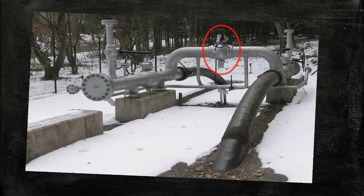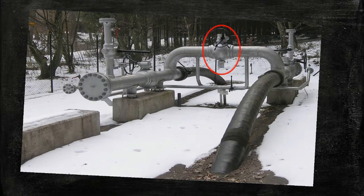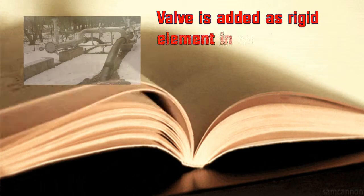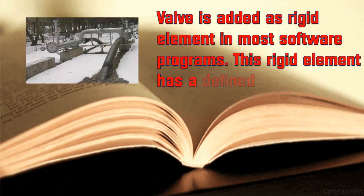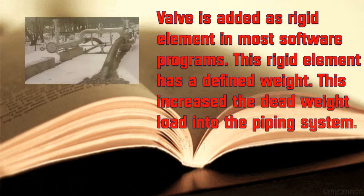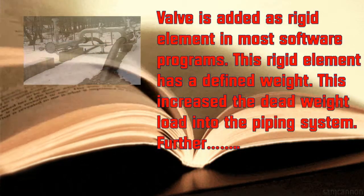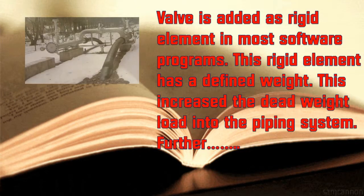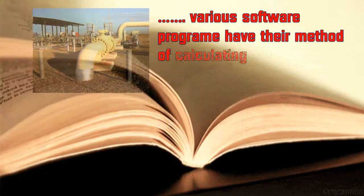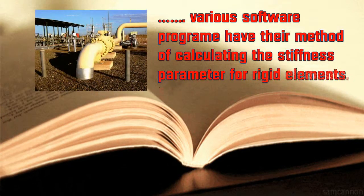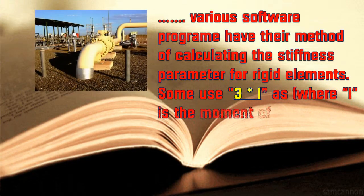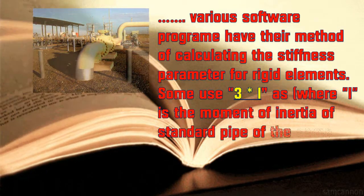The valve is added as a rigid element in most software programs. This rigid element has a defined weight, which increases the dead weight load in the piping system. Further, various software programs have their method of calculating the stiffness parameter for rigid elements — some use three times I, where I is the moment of inertia of a standard pipe of the same diameter.